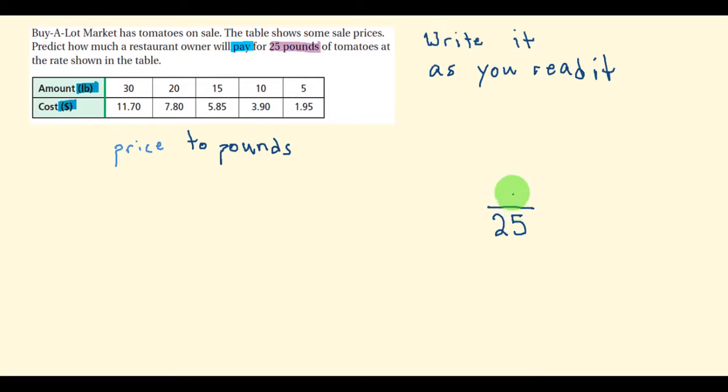So the unknown portion—I need to know how much I will pay. And I can use any of this information in the table to help me out. So I've got to ask myself, using the weight in the table, these values for weight, I've got to ask, do any of these values go into 25 real easy?